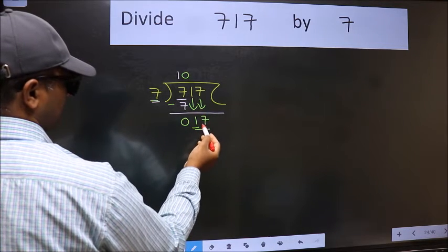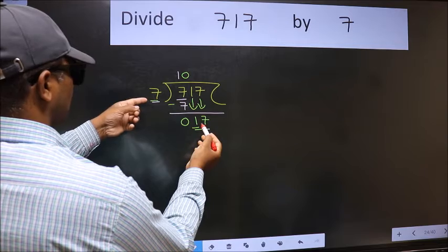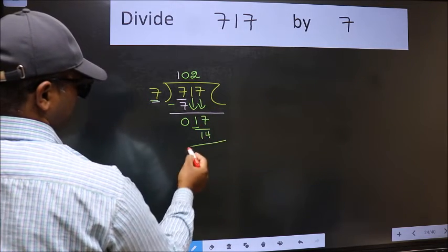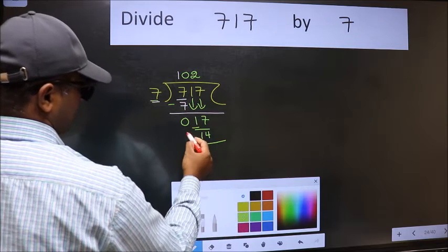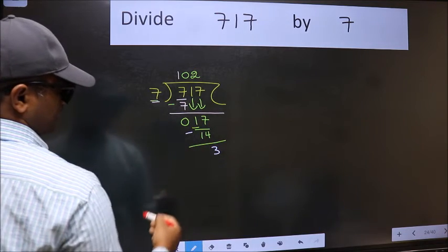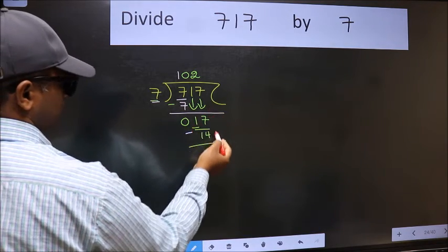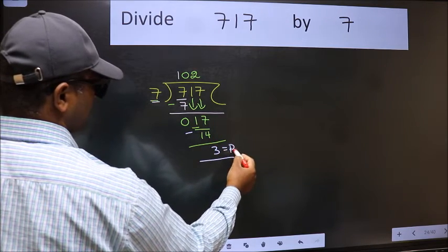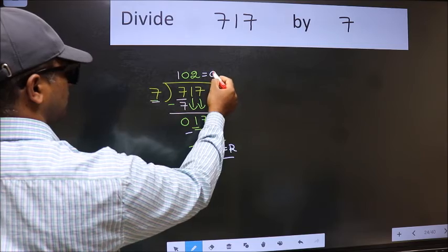Now 17. A number close to 17 in 7 table is 7 to 14. Now we should subtract. We get 3. No more numbers to bring it down. So we stop here. This is our remainder and this is our quotient.